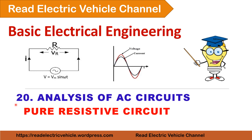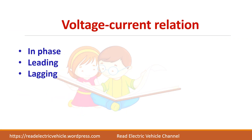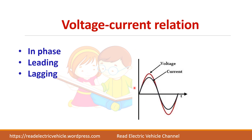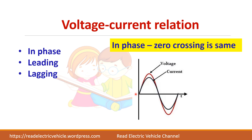In this video let us analyze a pure resistive circuit. In any circuit, the voltage-current relationship is represented by one of the terms: in phase, leading, or lagging. If you take this waveform, you can see that the voltage and the current have the same starting point, and the zero crossing of both waves at every point is the same. In such cases, we call the voltage and current in phase. Though the magnitude is different, they are said to be in phase.